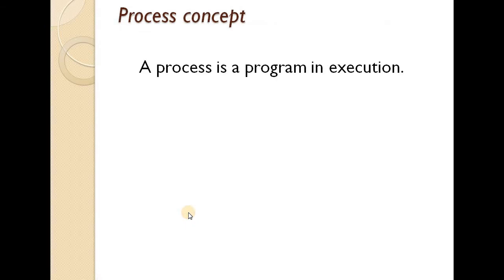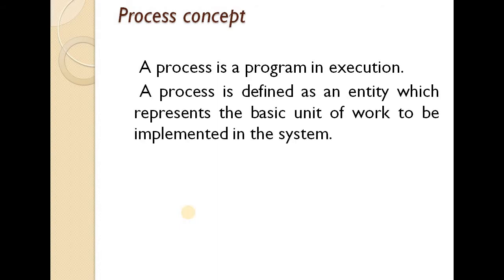So what is a process? A process is a program in execution. When we write a program and save it, it is a text file. And when we execute this text file, it becomes a process. A process is defined as an entity which represents the basic unit of work to be implemented in the system.